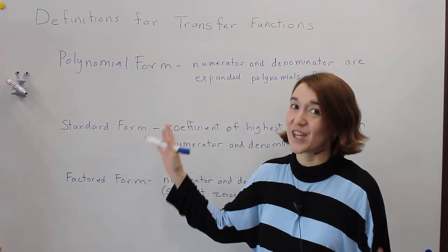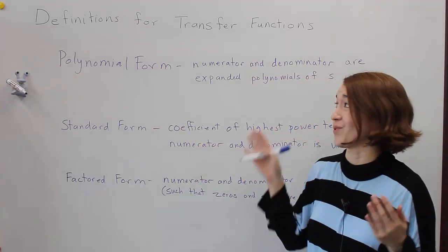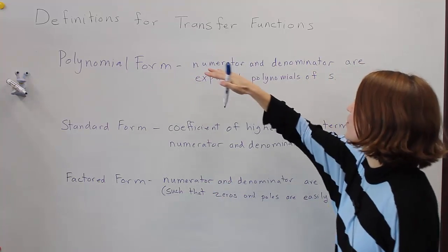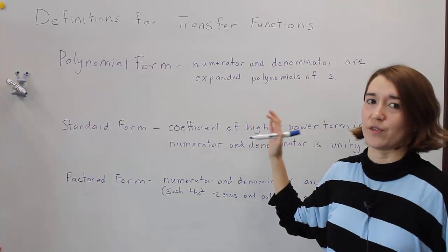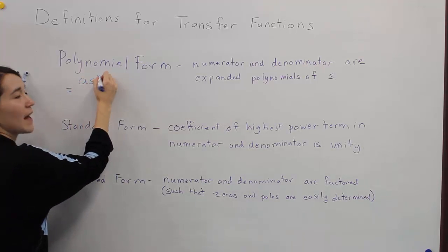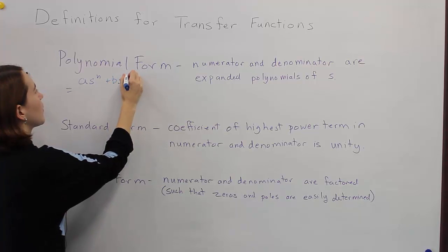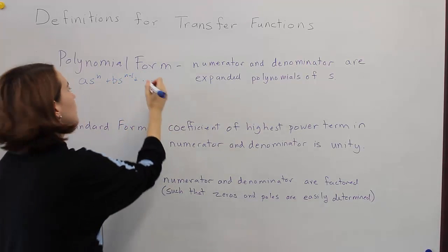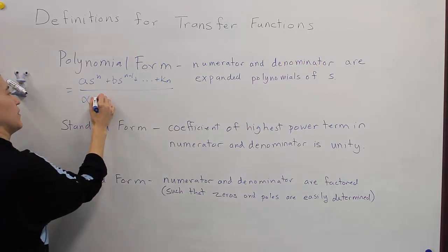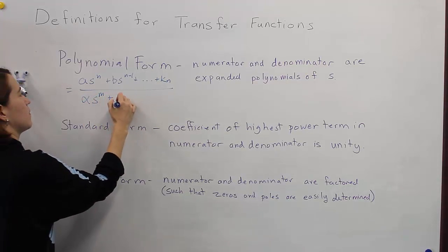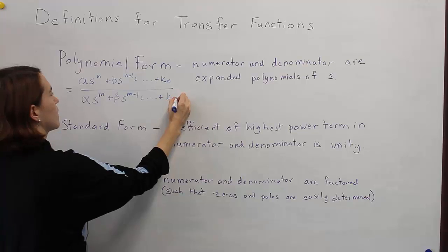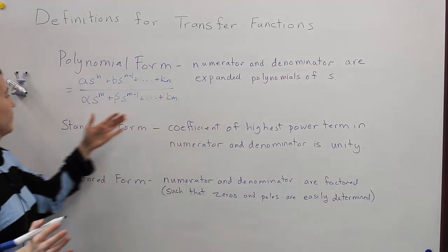For clarity, Valerie wrote out the definitions for each of these forms. Polynomial form is where the numerator and denominator are expanded polynomials of S. In general form, the numerator looks like a·Sⁿ plus b·S^(n−1) plus all terms down to a constant, and the denominator follows the same pattern down to its constant term.